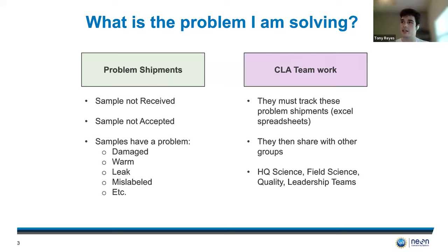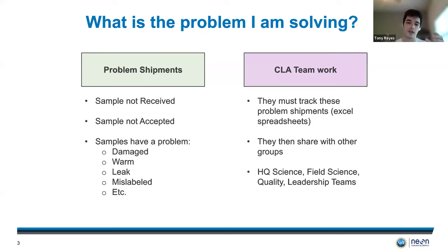What the CLA team here at Neon already does is track all of these problem shipments in an Excel spreadsheet. And when they start working on it with ServiceNow, they also keep track of all of that information. After all of that, they are then tasked to share all of this information to prospective teams like AHP science, field science, quality, and leadership teams.